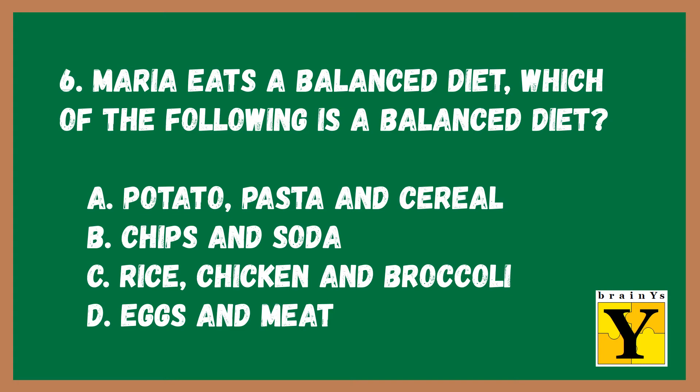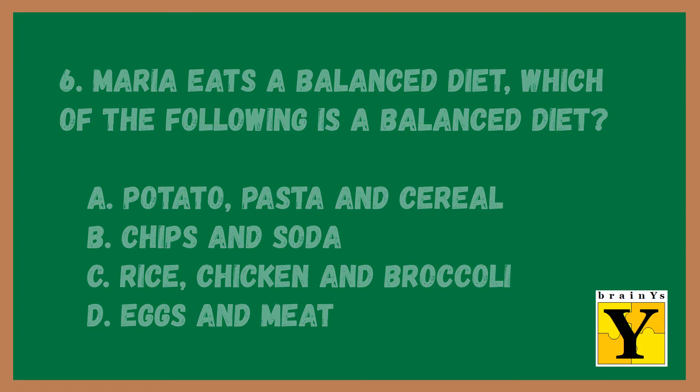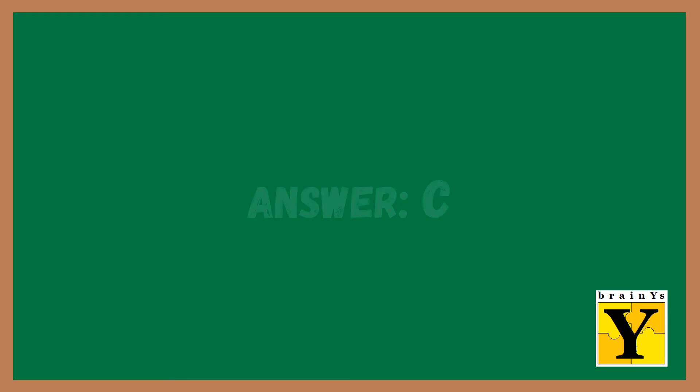Number six: Which of the following is a healthy meal? A. [missing], B. Chips and soda, C. Rice, chicken, and broccoli, D. Eggs and meat. The answer is C.